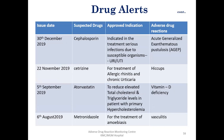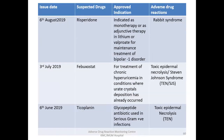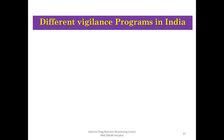Drug alerts include: olanzapine (atypical antipsychotic for schizophrenia) causing hyponatremia; piperacillin-tazobactam causing blurred vision; disulfiram causing skin hyperpigmentation; fluconazole (antifungal) causing mouth ulceration; cephalosporins causing AGEP; cetirizine causing hiccups; atorvastatin (cholesterol-lowering drug) causing vitamin D deficiency; metronidazole causing vasculitis; risperidone causing rabbit syndrome; febuxostat causing TEN; and teicoplanin (antibiotic) causing TEN.